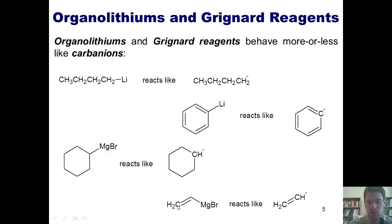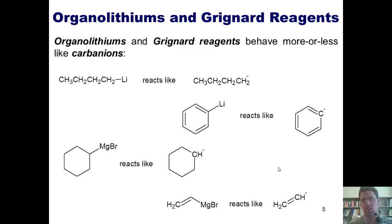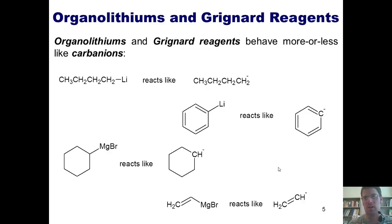Up to this point, we've traditionally talked about carbons as having partial positive charges, because in most reactions they're bonded to halogens, oxygens, nitrogens, or other elements more electronegative than carbon. But in these reagents, where a metal is bonded to a carbon, carbon is much more electronegative than the metal. So the carbon ends up hogging the electrons, making it behave more or less like a carbanion — a negatively charged carbon.